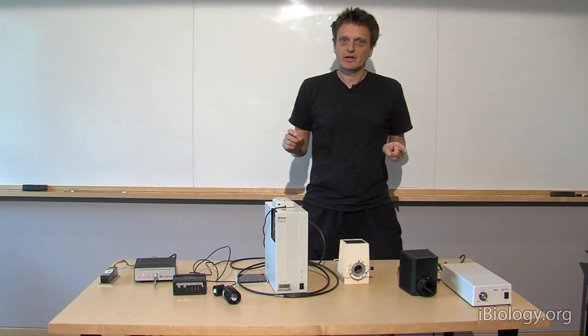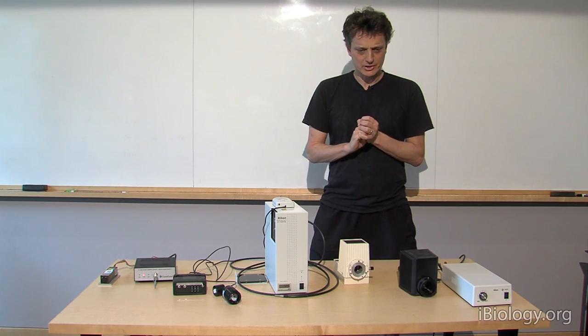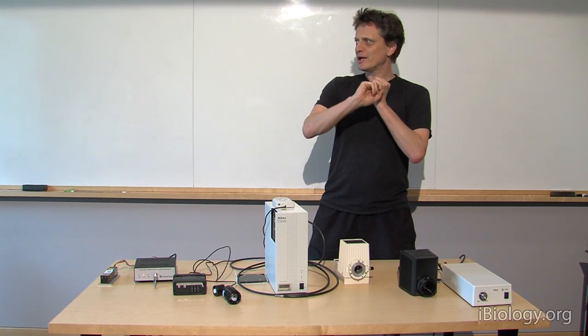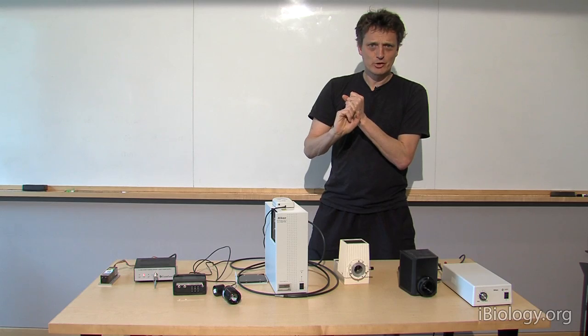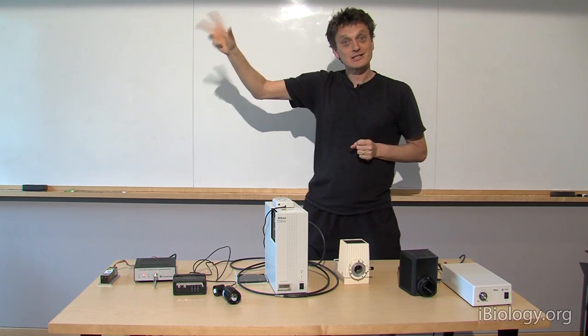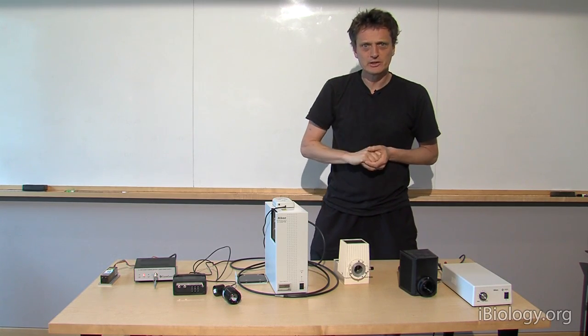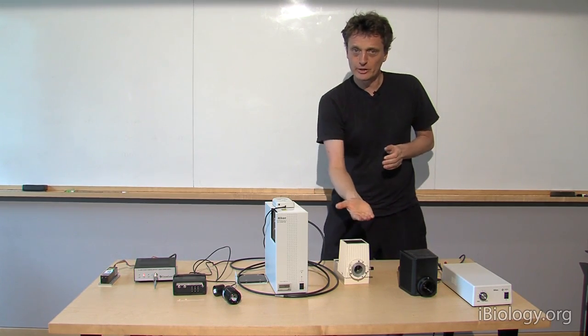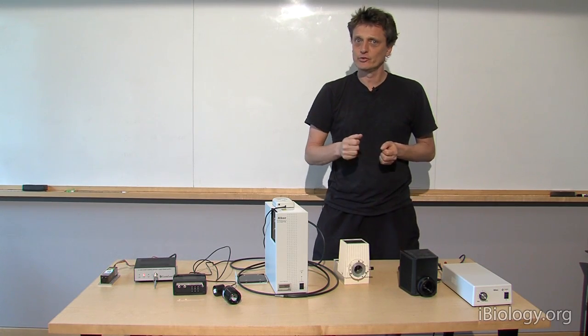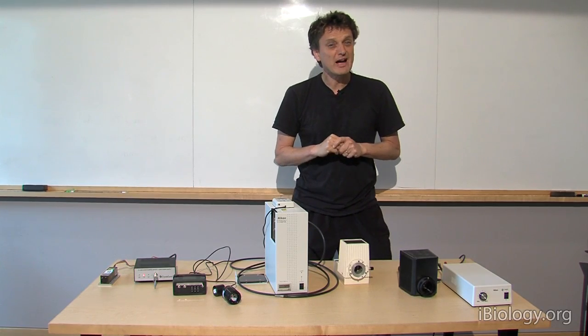I'd like to show you some of the light sources that we are using nowadays in microscopy. The very first light source that we don't use anymore on modern microscopes is right outside. The sun has been used for many centuries to illuminate our specimens, often using a little mirror that directs the sunlight onto the specimen. That used to be the brightest light source we could find.